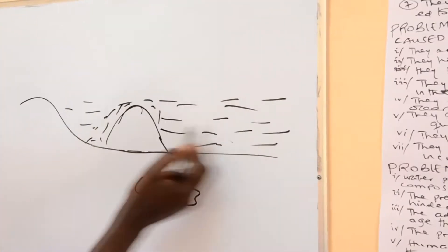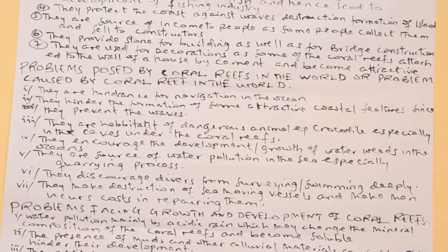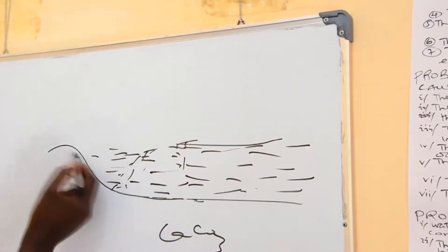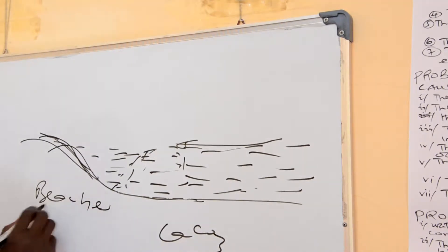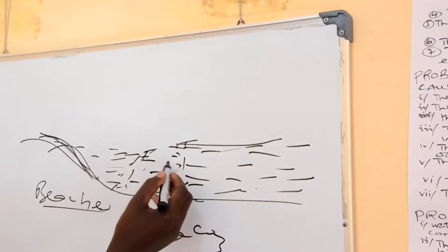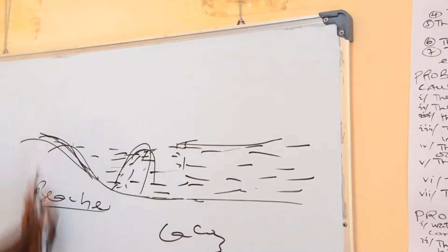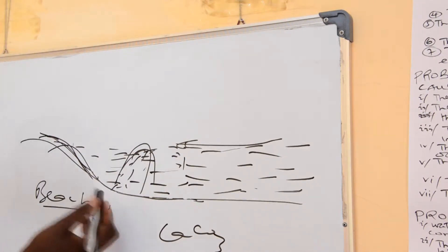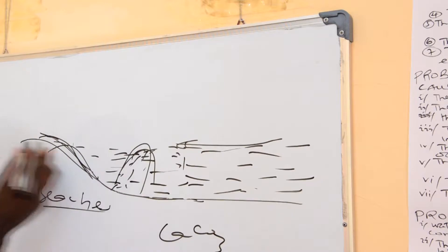Therefore, coral reefs hinder navigation in the ocean. They also hinder the formation of some attractive coastal features since they prevent the waves. There are some waves or currents from the middle of the ocean which can sweep some materials and deposit them on the landmass or coast. Those deposition materials are called beaches. But in areas where coral reefs are present, beaches will be impossible to form because the sediments are obstructed before reaching the coast.